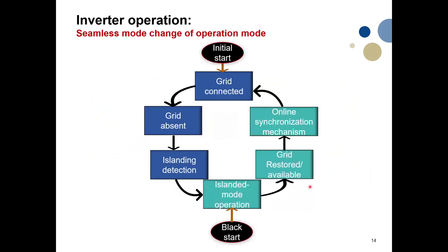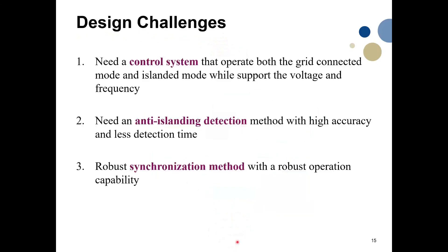We can now see the complete seamless operation sequence for the inverter-based microgrid: starting with offline synchronization and grid-connected operation, then when the islanding detection technique detects grid absence, transitioning to islanded mode, and when the grid is restored, performing online synchronization to reconnect to the grid. This forms a complete cycle — a plug-and-play capability where the converter can supply power to local loads and also operate in grid-connected mode without being turned off.